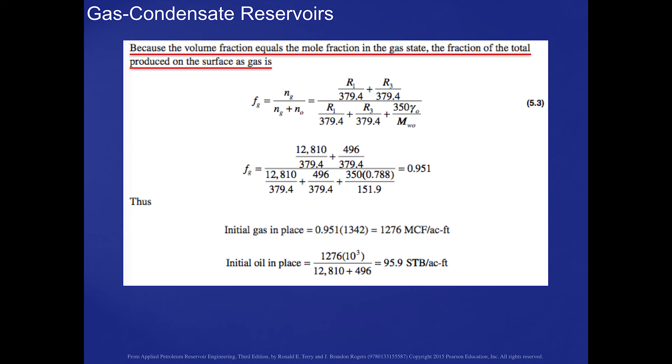Thus, the initial dry gas in place, we simply multiply 0.951 times our initial wet gas in place to give us what we could expect to have as our initial dry gas in place.